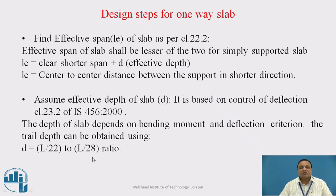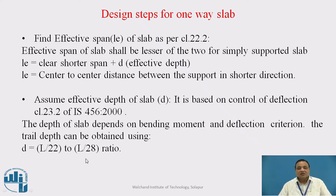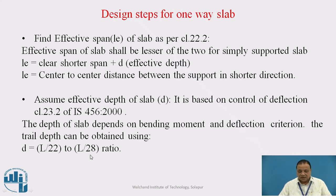In IS456-2000 clause 23.2, the effective depth gives an L by d ratio of 20. We take between L by 22 to L by 28 because if you take the constant F1, it usually works out to be 1.2 or 1.5. Therefore, usually we take L by 25, which is in between L by 22 to L by 28.